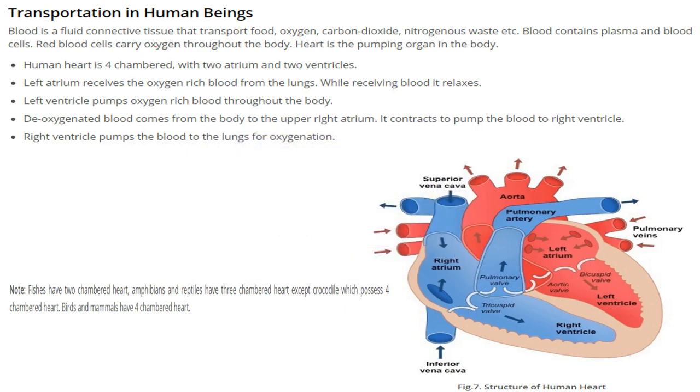Transportation, how does it take place in human beings? Blood is a fluid connective tissue that transports food, oxygen, carbon dioxide, and nitrogenous waste. Who is doing all this? Blood is doing this.